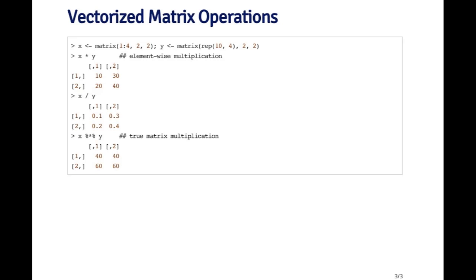The one-one element of X is multiplied by the one-one element of Y, and the two-two element is multiplying the two-two element of the other matrix, etc. So each element is multiplied together in parallel. Same when you do division. This is not a matrix inverse or something like that. This is just dividing one matrix literally element by element by another. If you want to do a true matrix multiplication, you have to use the percent star percent. That's the symbol for a matrix multiplication.